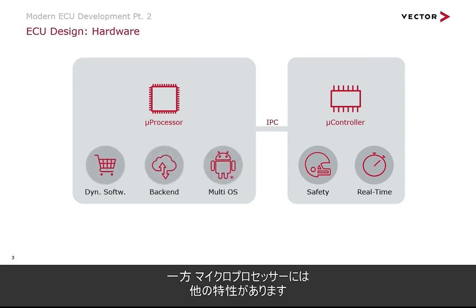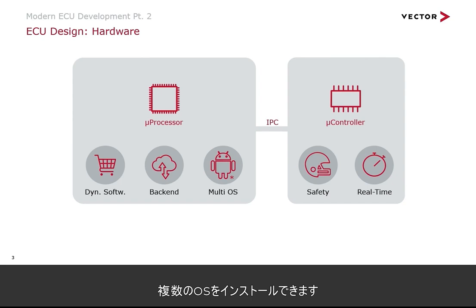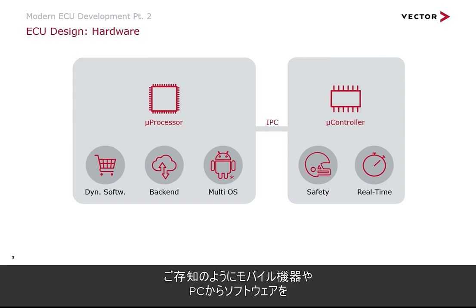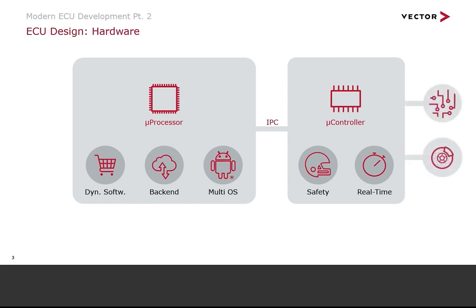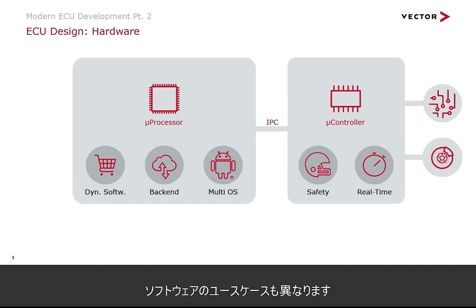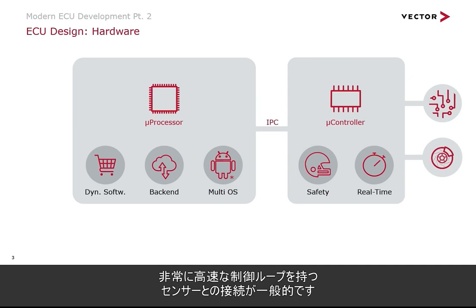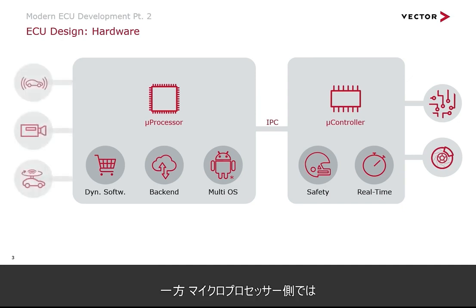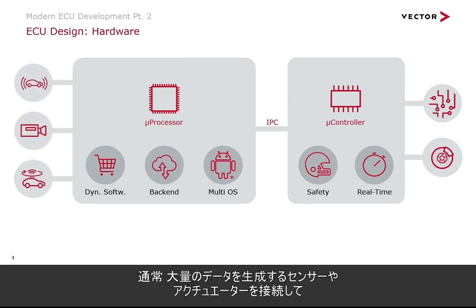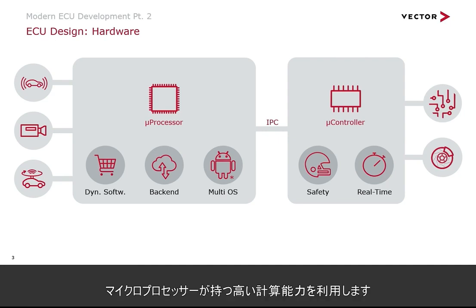On the microprocessor side, we have different properties. These are much more PC-like, with the benefit of running multiple operating systems such as Linux, QNX, Integrity, VxWorks, and Android. You can install software dynamically, as you know from mobile devices or your PC, and backend connectivity is also easier to establish here. The use cases differ accordingly: on the microcontroller side we typically handle direct I/O interaction or sensors with very fast control loops such as ABS systems or compressors, while on the microprocessor side we connect sensors and actuators that produce large amounts of data — such as radar, cameras, or LiDAR systems.